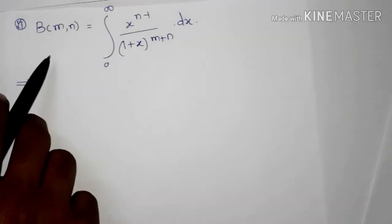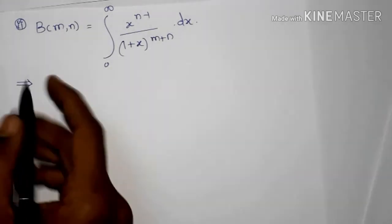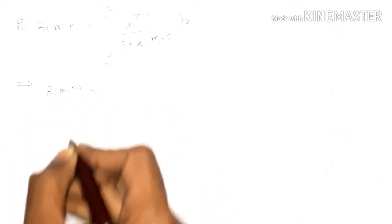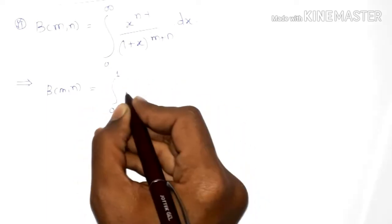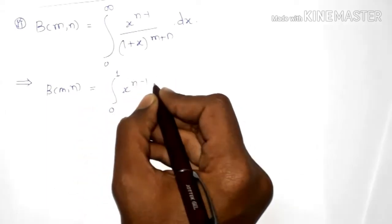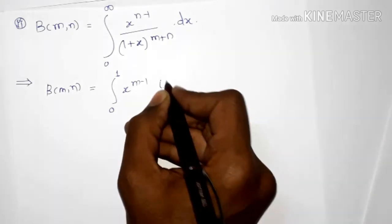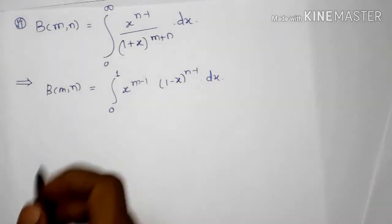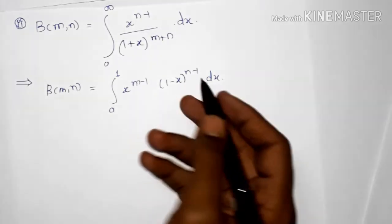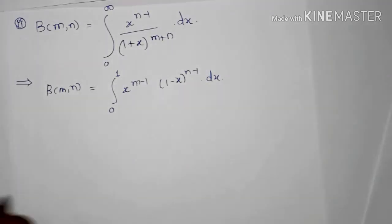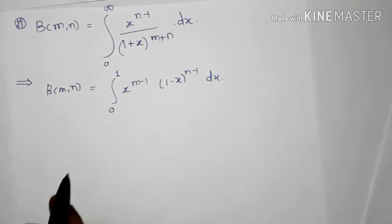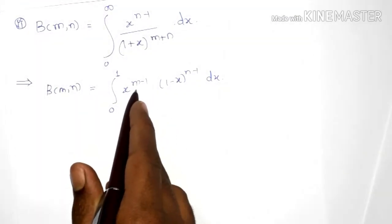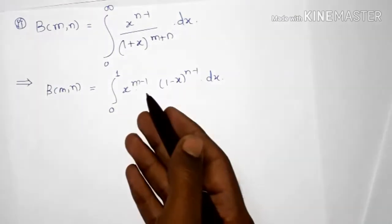We have to prove that beta(m,n) equals this integral. First we write beta(m,n) as the integral from 0 to 1 of x raised to m minus 1 into 1 minus x raised to n minus 1 dx. We can also write n and m swapped, since from the first property we have already seen that beta(m,n) is equal to beta(n,m), so there is no change if we switch the positions of m and n.